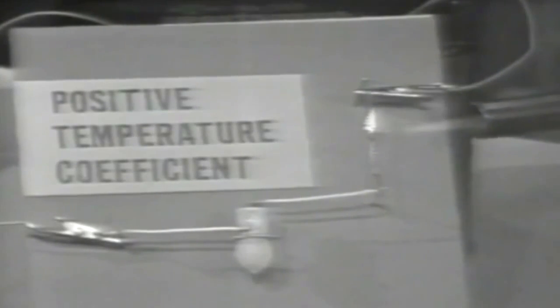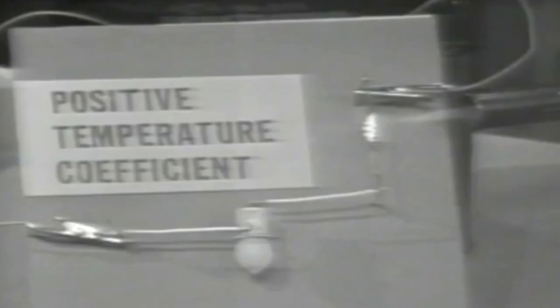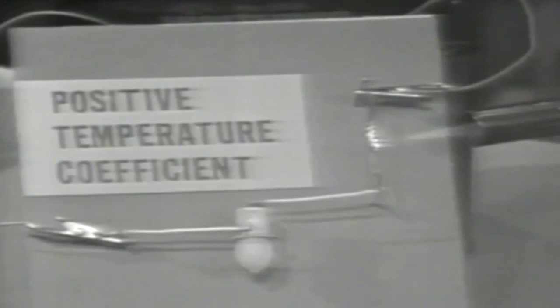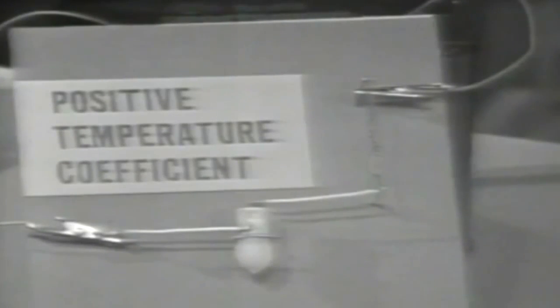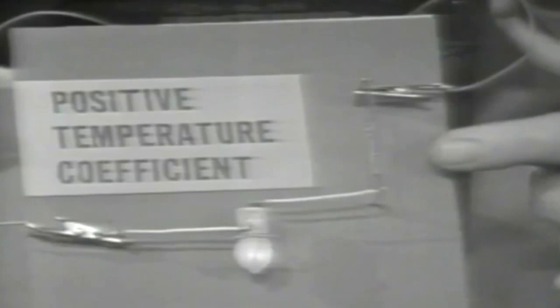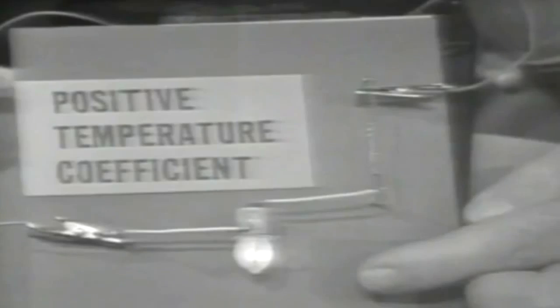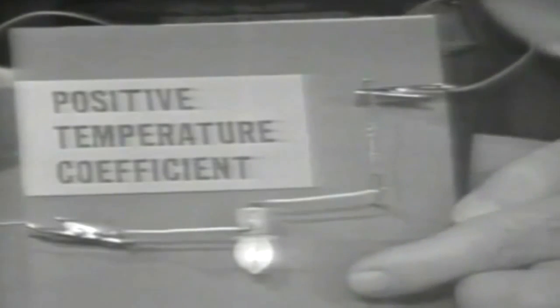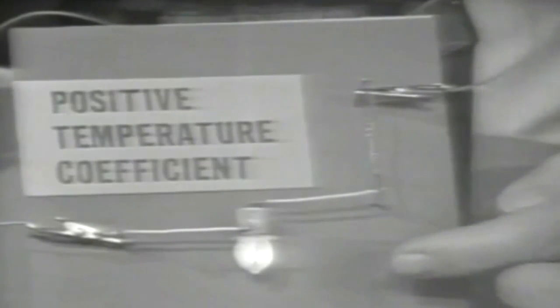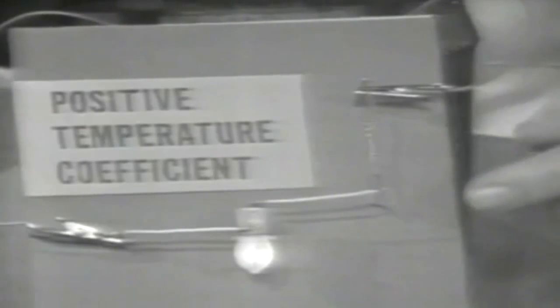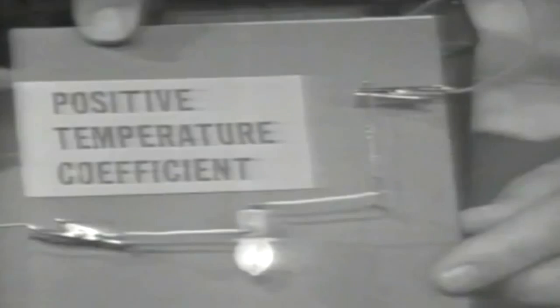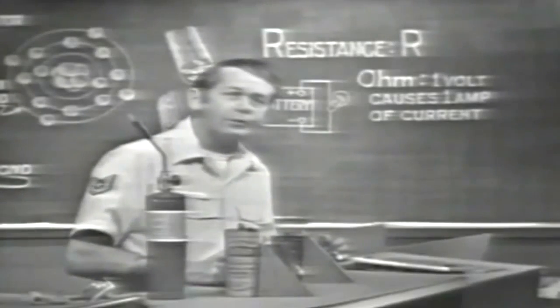As I apply heat to the tungsten, its resistance goes up, there's less current through the bulb. When I remove the heat, the tungsten cools, resistance goes down, current through the bulb increases. If resistance goes up when the material gets hotter, the material has a positive temperature coefficient. Tungsten then has a positive temperature coefficient.